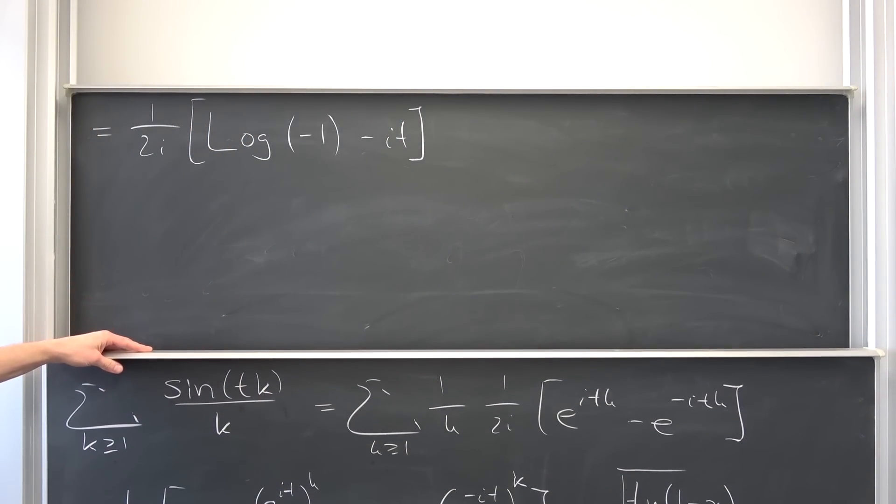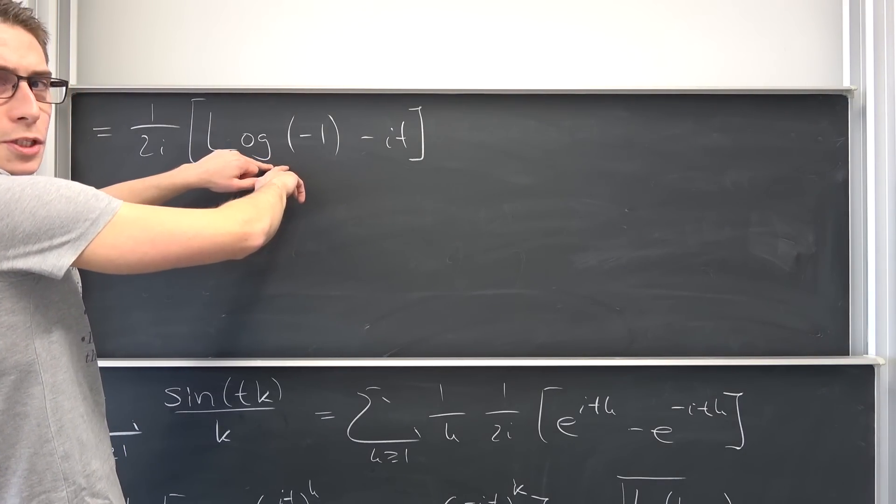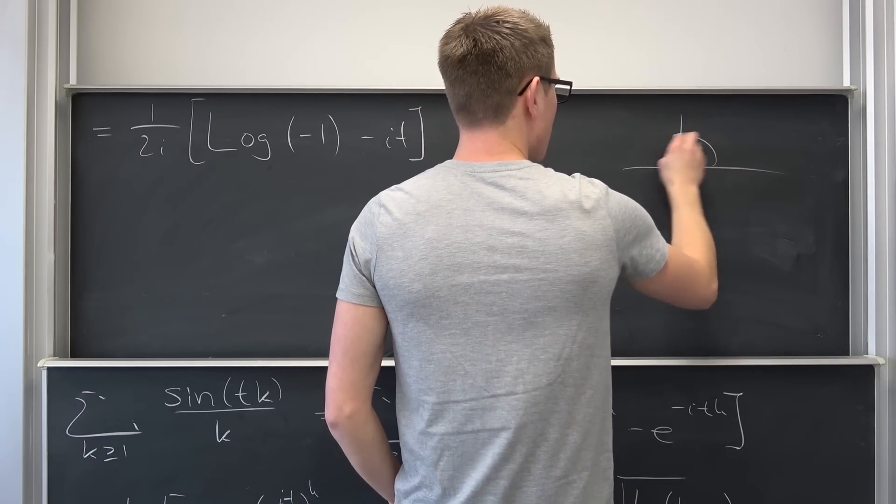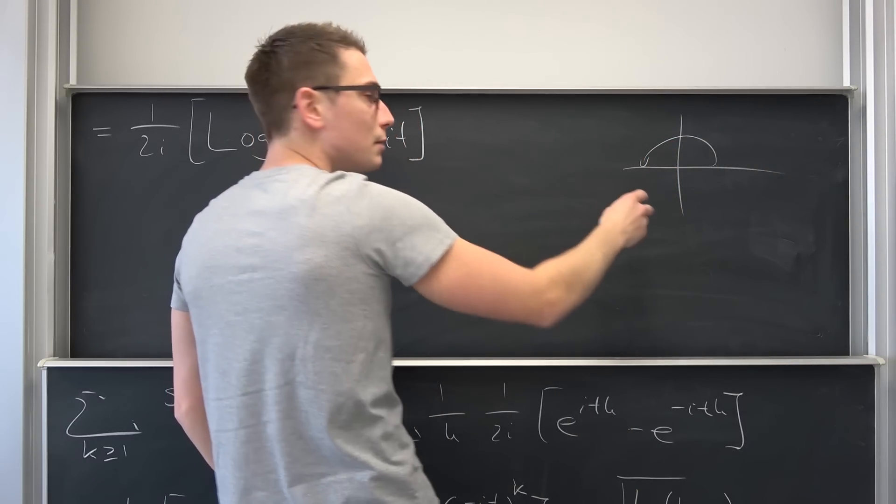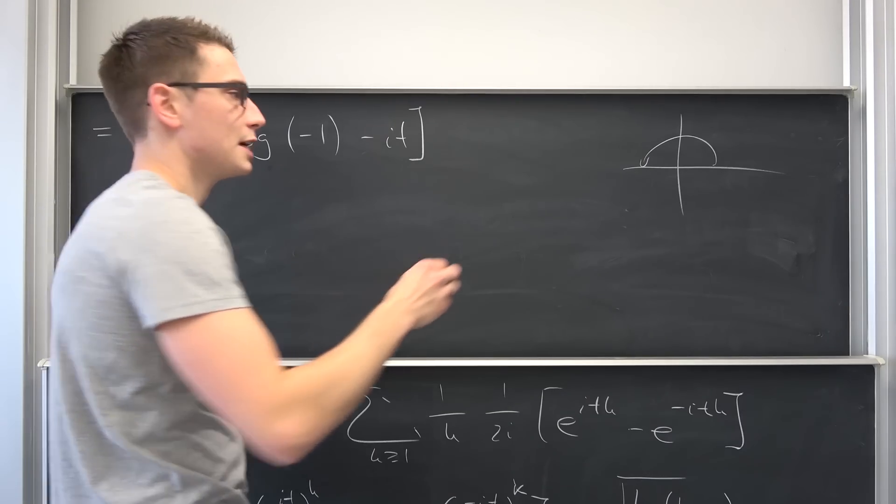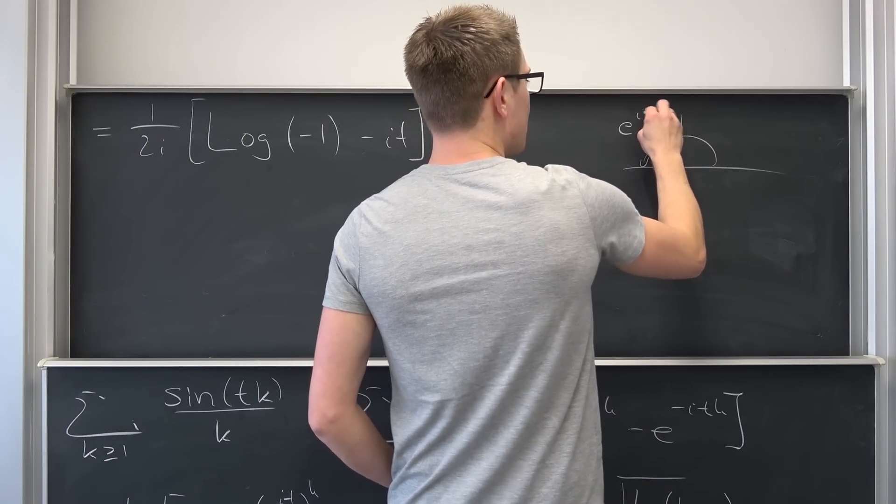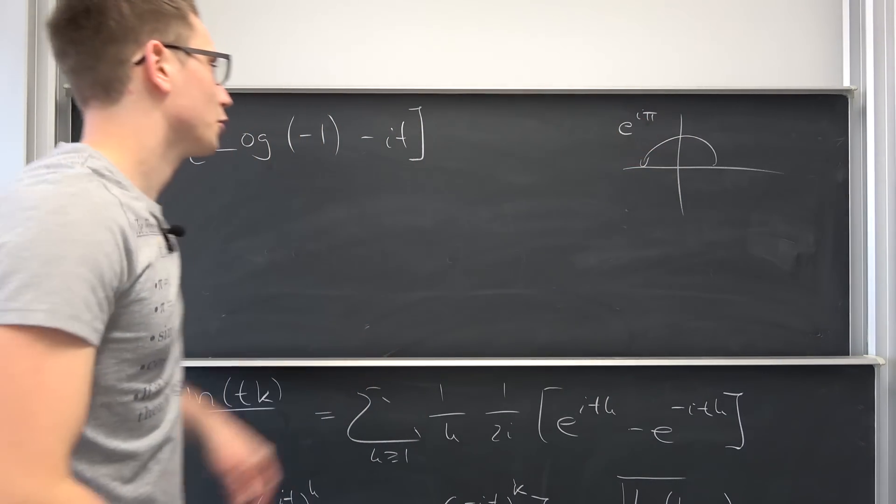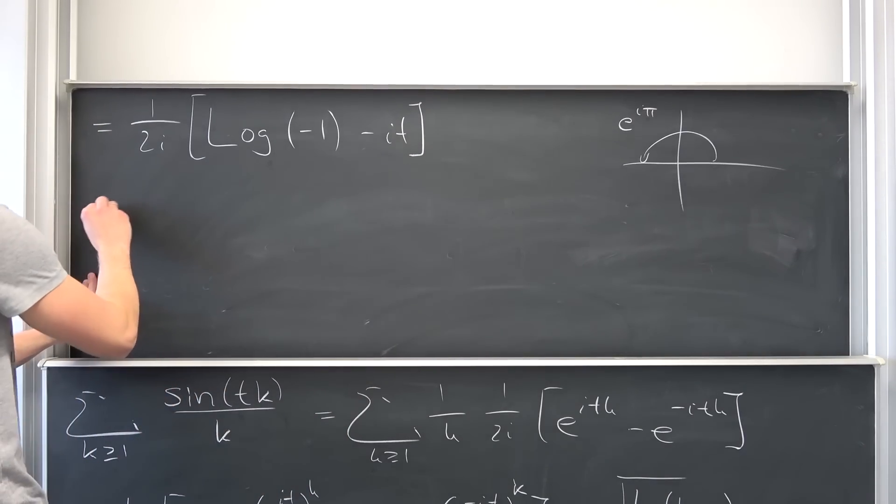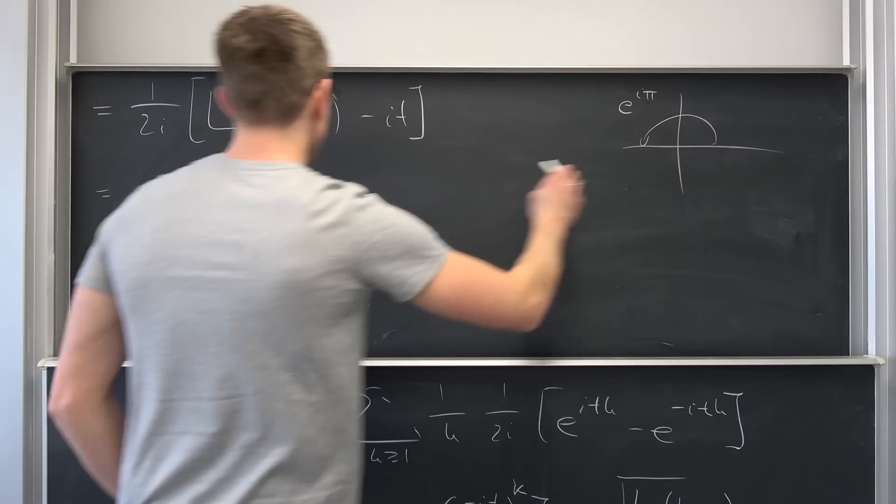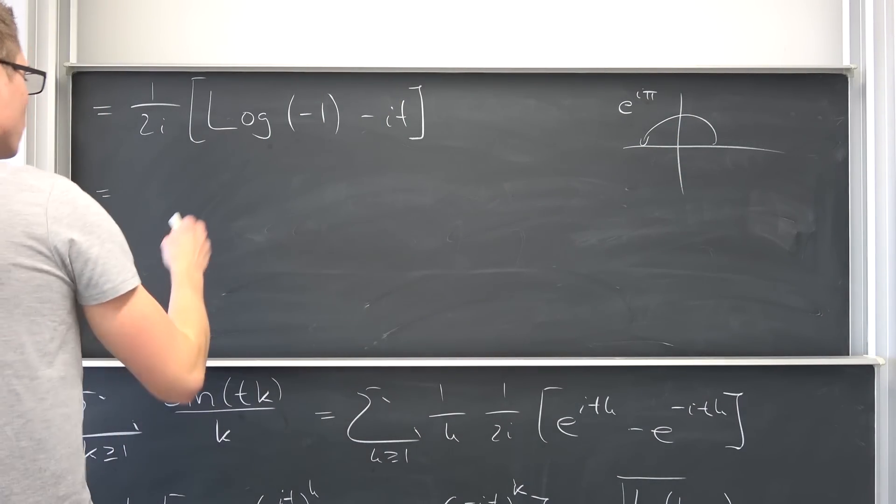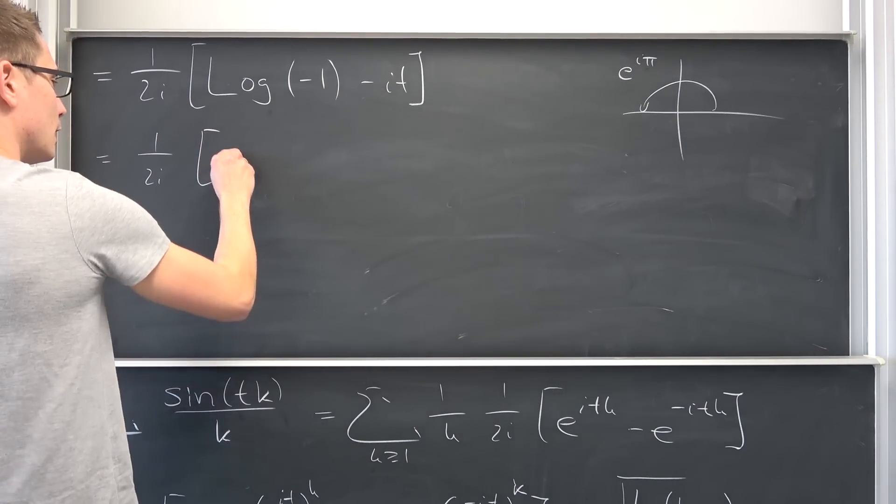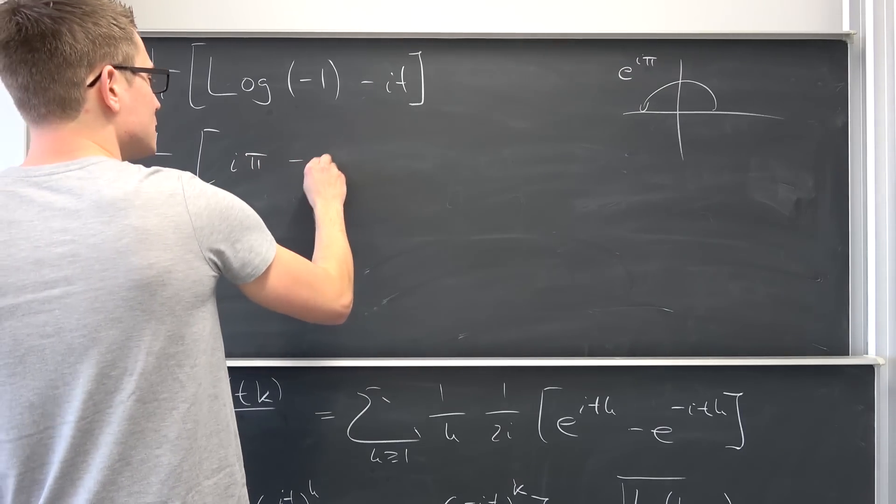Coolio. Now we can move on from here. The principal log of negative 1. Just going through this quick. Negative 1 is right here, meaning we are going to have a rotation of e to the i pi. And if we take the natural log on both sides we are going to get i pi overall. I hope this does make sense to you.